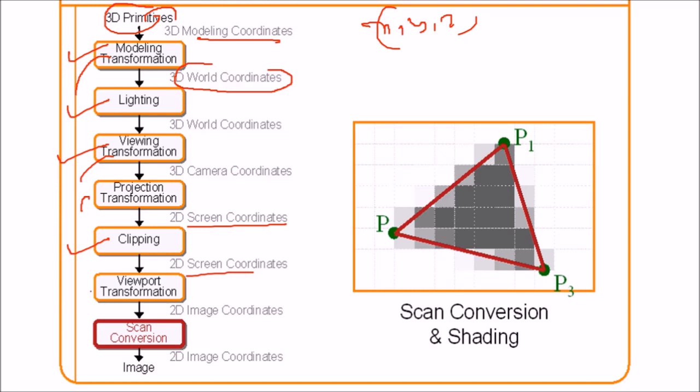And then in the 2D screen coordinates, we do the viewport transformation because we have to show it in this viewport. And then the scan conversion, finally we get the image in the 2D image coordinates. This is the final result which we actually get with some point P1, P2, P3 as X, Y and Z.